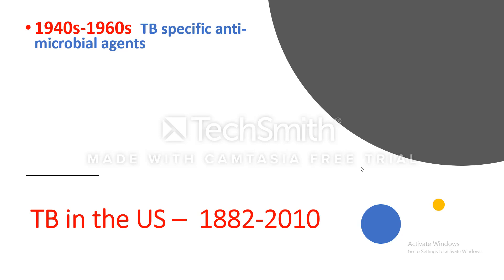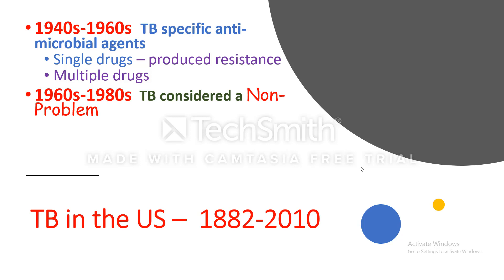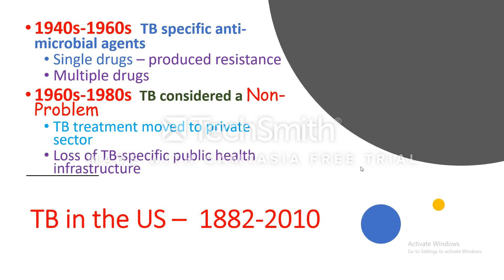In the 1940s to 1960s, TB-specific antimicrobial agents were discovered. At first single drugs were given, but due to resistance, single drugs were replaced with multiple-drug regimens. In the 1960s to 1980s, tuberculosis was considered a non-problem; TB treatment moved to the private sector and there was a loss of TB-specific public health infrastructure.